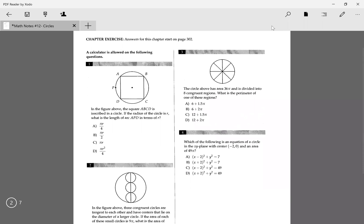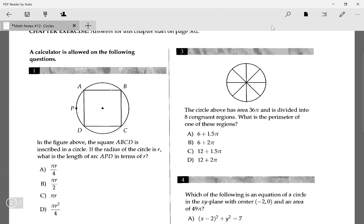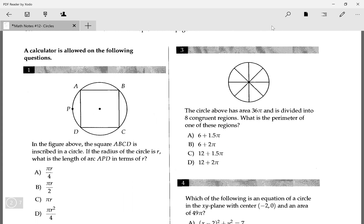Okay, the first one I'm going over is number 3. The circle above has area 36π, and it's divided into eight congruent regions. What is the perimeter of one of these regions? So I'll just pick a random region. I'll say this region right here. I want to know what the perimeter of this is.